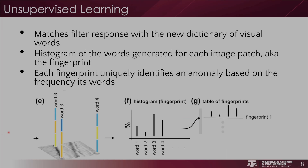Next, the powder bed images run through the filters again and the filter response is matched with the new dictionary of visual words. A histogram of the words generated for each image patch is created — this is called the fingerprint — where for each image patch you see which word it's most similar to. Based on that, you can determine what type of anomaly is present through the subsequent supervised learning steps, where each cluster is classified with its ground truth anomaly. Each fingerprint uniquely identifies an anomaly based on its frequency of words, and this is put into a table of fingerprints for reference.